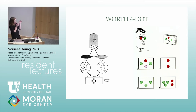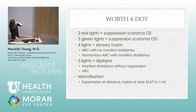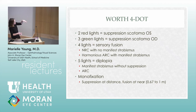Worth 4-dot interpretation can be difficult in patients who alternately fuse. If they see two or three lights, they're suppressing one eye depending on how the glasses are oriented. If they see four together, they're fusing. You can also use crossed or uncrossed positions — if they're seeing the lights crossed, they have an exotropia; uncrossed means an esotropia. Seeing five lights means double vision or alternating suppression.